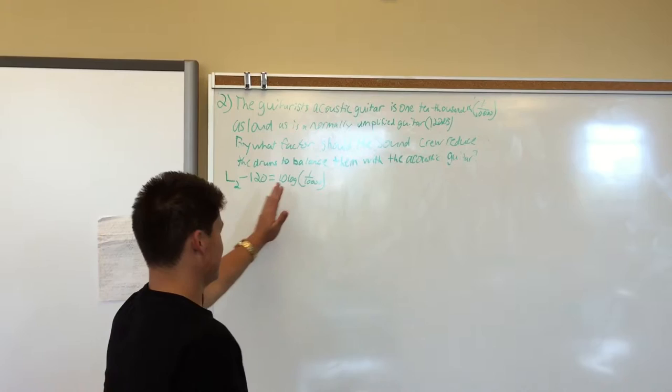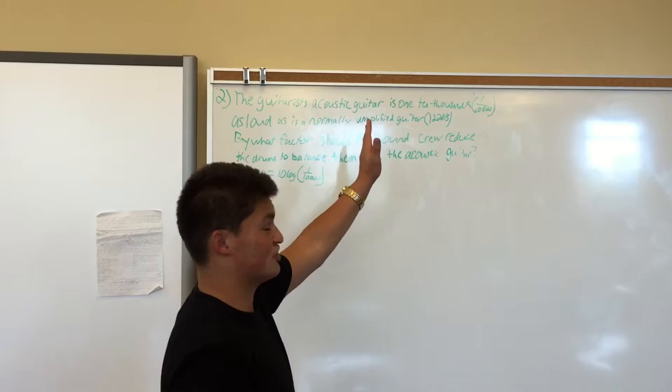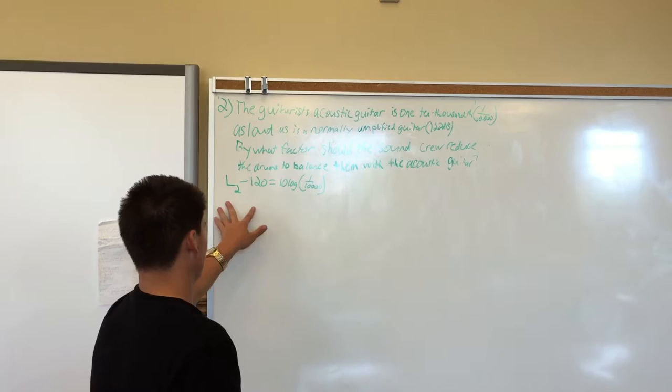What we're going to do is plug it into the logarithmic equation. Since we've been given the ratio, we need to solve for L2. We know that we have the 120 decibels, which is the smaller number between 120 and 150, so we plug it in as L1.